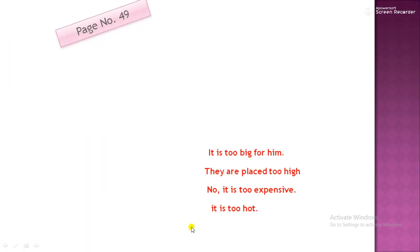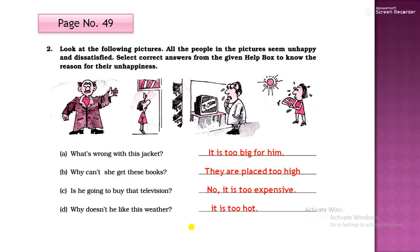Okay. So this is next. At page 49. Look at the following pictures. All the people in the pictures seem unhappy and dissatisfied. Select correct answers from the given help box to know the reason for their unhappiness. What's wrong with this jacket? So you can see. This jacket is not properly fitted. So it is loose. It's too big for him. Why can't she get these books? So now you can see books are at high place. So they are placed too high. Why is he going to buy that television? This television? 50,000. No. It's too expensive.